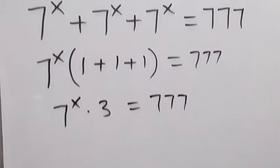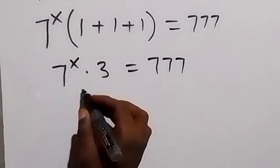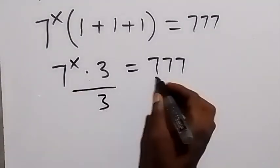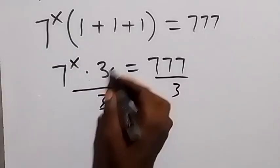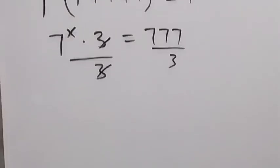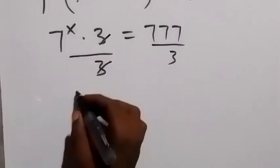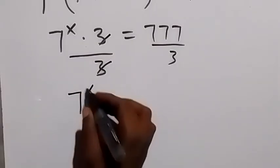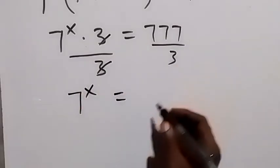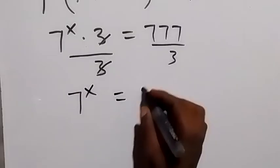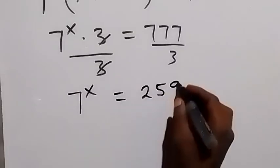And in the next step, we can divide both sides by 3. Divide both sides by 3 and then 3 cancels on this side. So we have 7 raised to the power x left here which is equal to 777 divided by 3, that will give us 259.